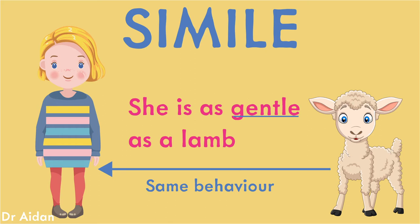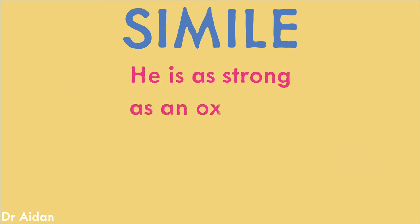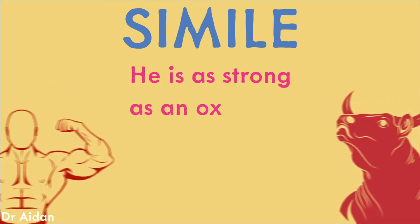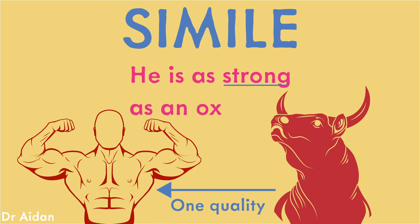A very different idea comes from he's as strong as an ox. Here we focus on the single quality of strength as epitomised by an ox. Note that the simile focuses on one quality — the strength — as opposed to any others, such as its level of intelligence or its aggression.